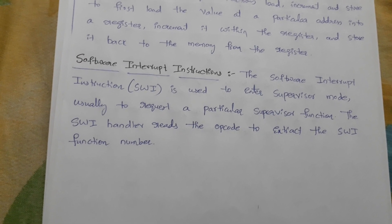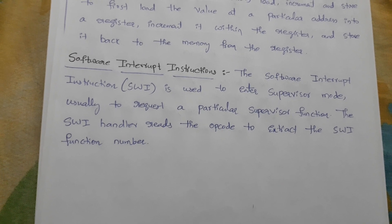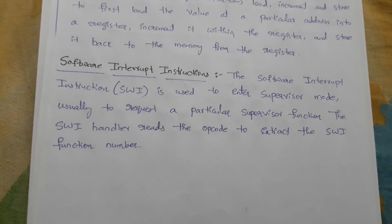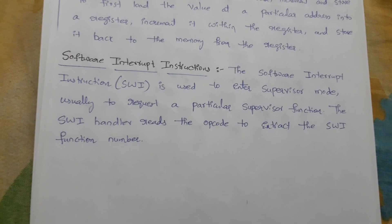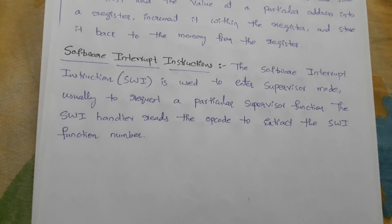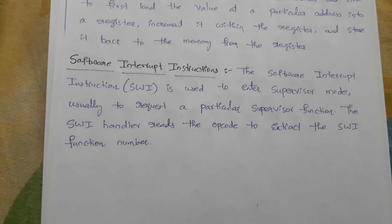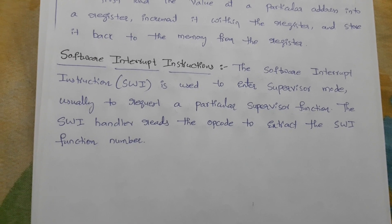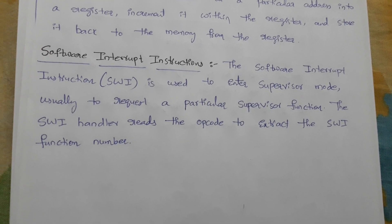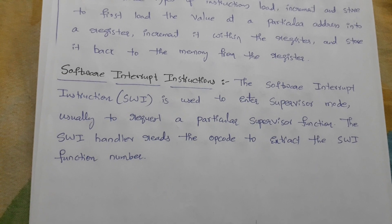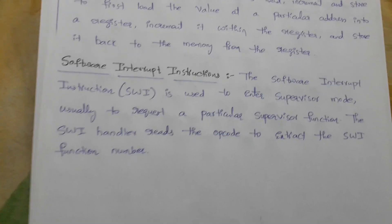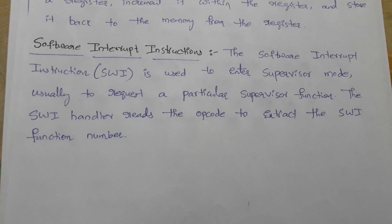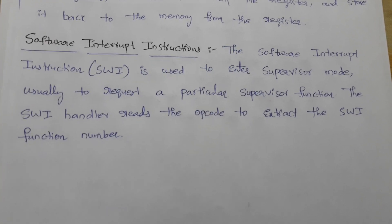Next are software interrupt instructions, called SWI. SWI is used to enter supervisor mode, usually to request a particular supervisor function. The SWI handler reads the opcode to extract the SWI function number. So software interrupt instructions are used to read or extract the opcode used in programming memory.